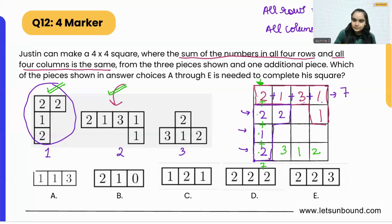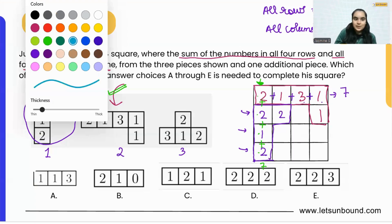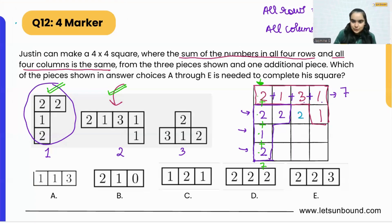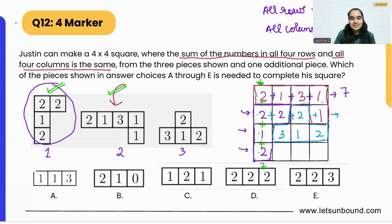Now let's arrange the third piece. Since the answer options show three squares in a line, we can't place it in certain orientations. We place it in the remaining space with values 2, 3, 1, 2. Checking the row: 2 plus 2 is 4, plus 2 is 6, plus 1 is 7. And the third row: 1 plus 3 is 4, plus 1 is 5, plus 2 is 7. So far we are doing good.